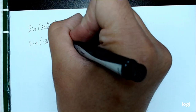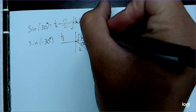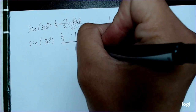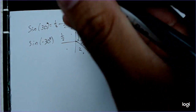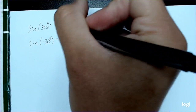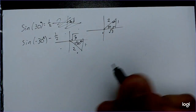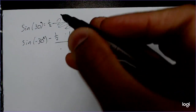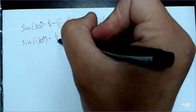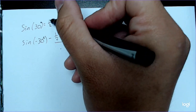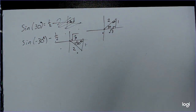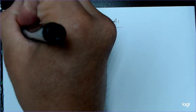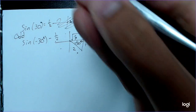But remember — all students take calculus — cosine is the only positive function in the fourth quadrant, which means this one-half has to be negative. So we see opposite values: sine of 30 is positive one-half and sine of negative 30 is negative one-half. We did not get the same answer, so sine is an odd function.